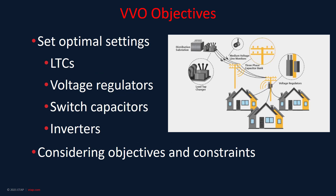VVO-C finds and sets the optimum settings of voltage and VAR control devices, optimizing Volt-VAR in the distribution network by adjusting the load tap changer, voltage regulator, and capacitor. It brings up voltage levels by changing tap positions on transformers and reduces VAR flow to minimize overall voltage drop and reduce power loss.